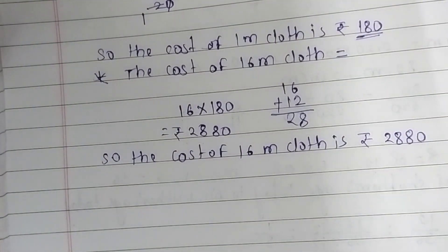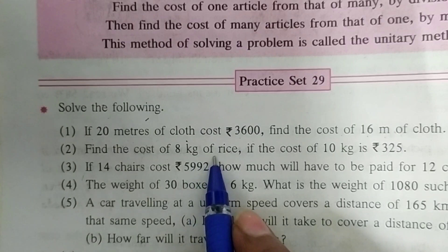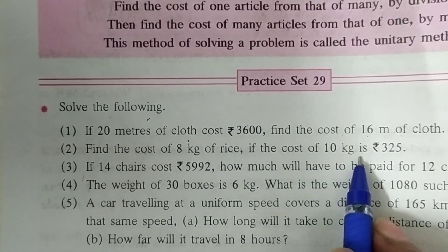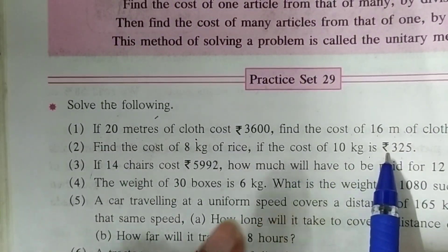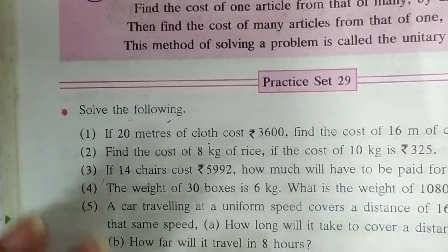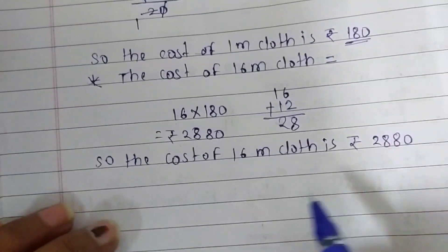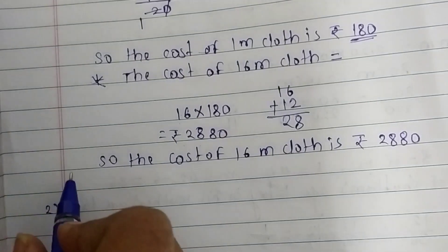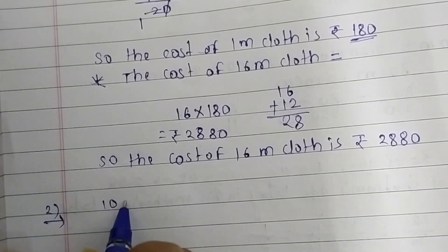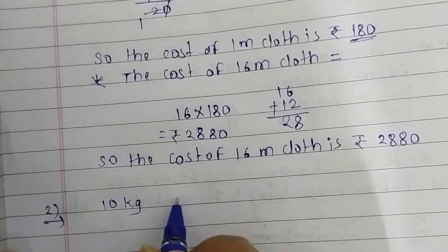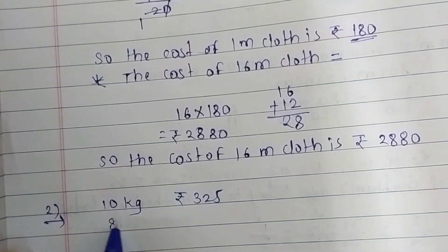Now let's look at the second question. Find the cost of 8 kg of rice if the cost of 10 kg is rupees 325. Here they give us the cost of 10 kg of rice and we have to find out the cost of 8 kg of rice — same method we are going to do here. First write the given information: 10 kg of rice costs rupees 325, and we have to find out the cost of 8 kg of rice.